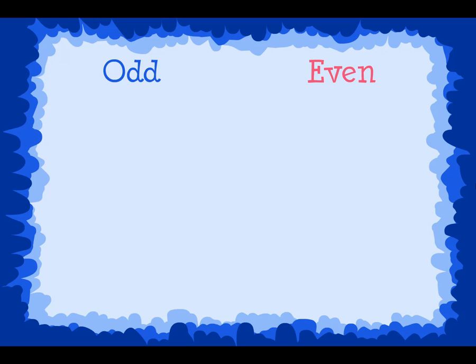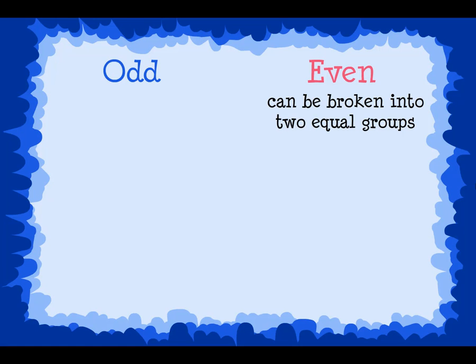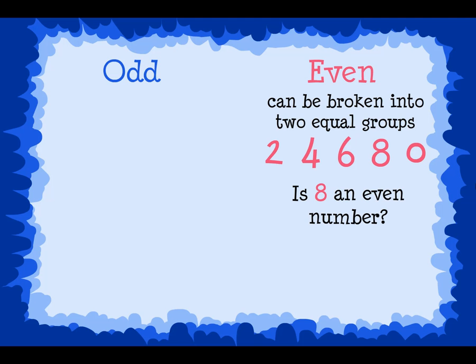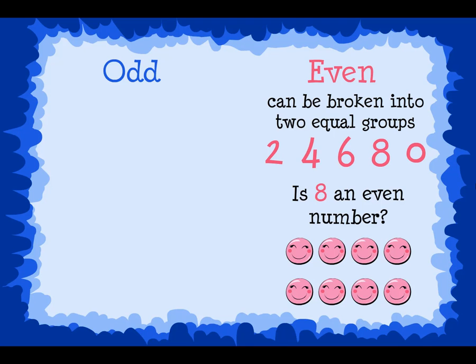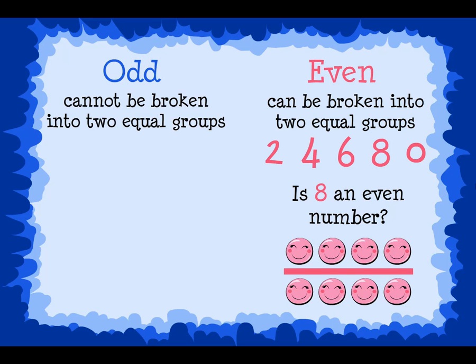Counting by twos can show a pattern of odd and even numbers. Even numbers can be broken into two equal groups. When we start with two and count by twos, we are using even numbers. Even numbers will always have a 2, a 4, a 6, an 8, or a 0 in the ones place. Is eight an even number? Yes, eight is an even number because it can be broken into two equal groups. Odd numbers cannot be broken into two equal groups. There will always be one left over. When counting by twos and starting with one, you will be using odd numbers.